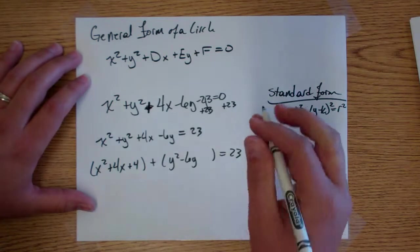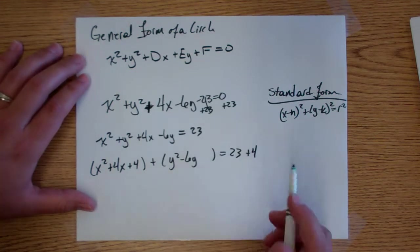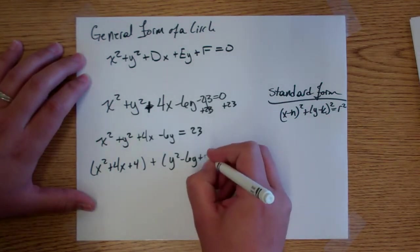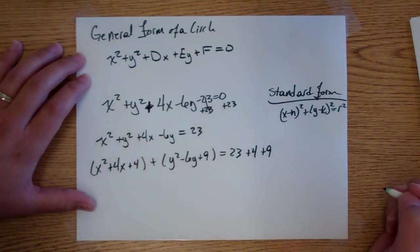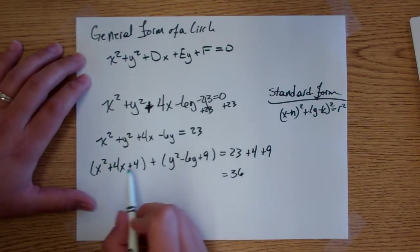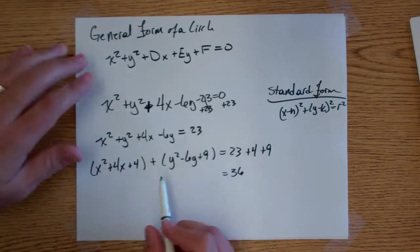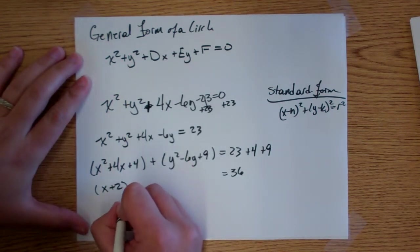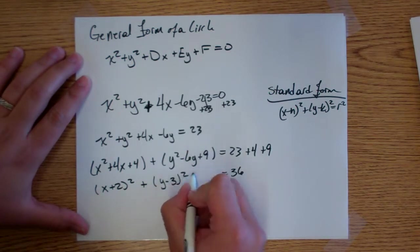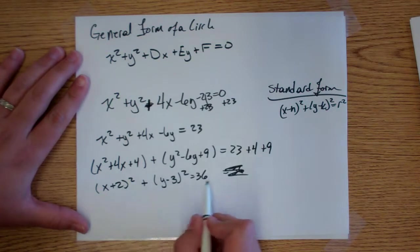Since we added 4 to the left side, we have to add 4 to the right side as well. For the y term: half of negative 6 is negative 3, and negative 3 squared is positive 9. So we add plus 9 inside the grouping, and also add 9 to the right side. This all equals 36. Both trinomials are now factorable: the x group factors into (x plus 2) squared, and the y group factors into (y minus 3) squared.